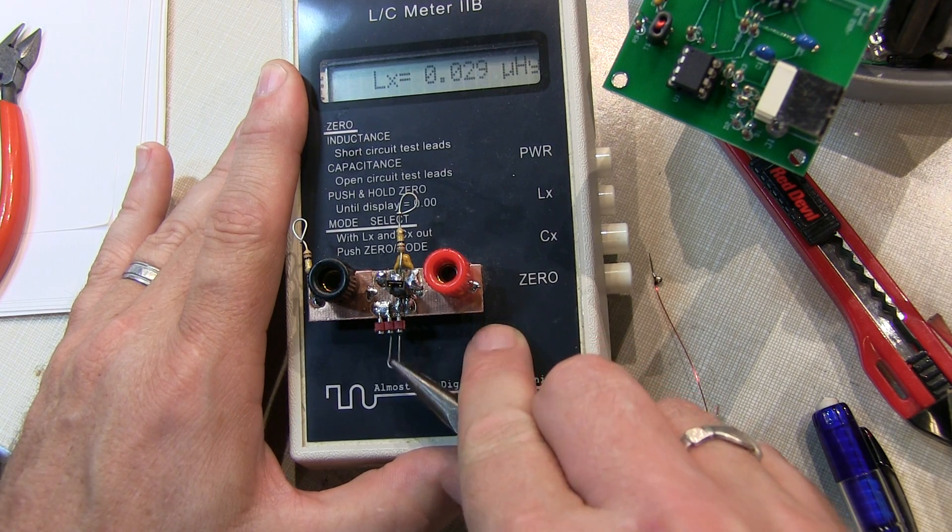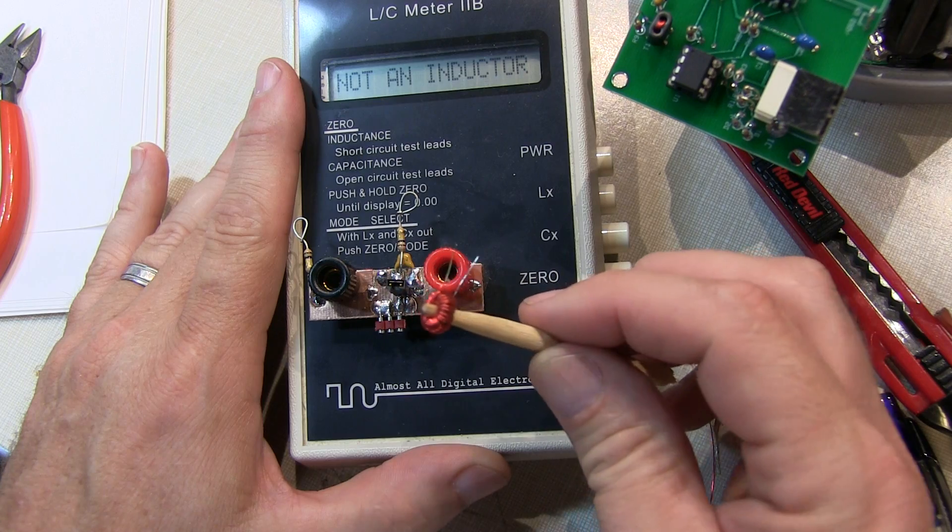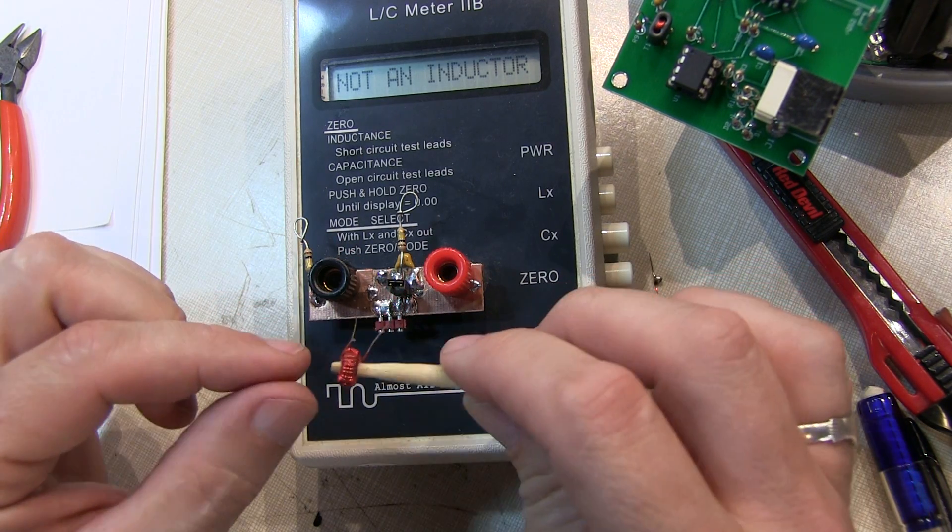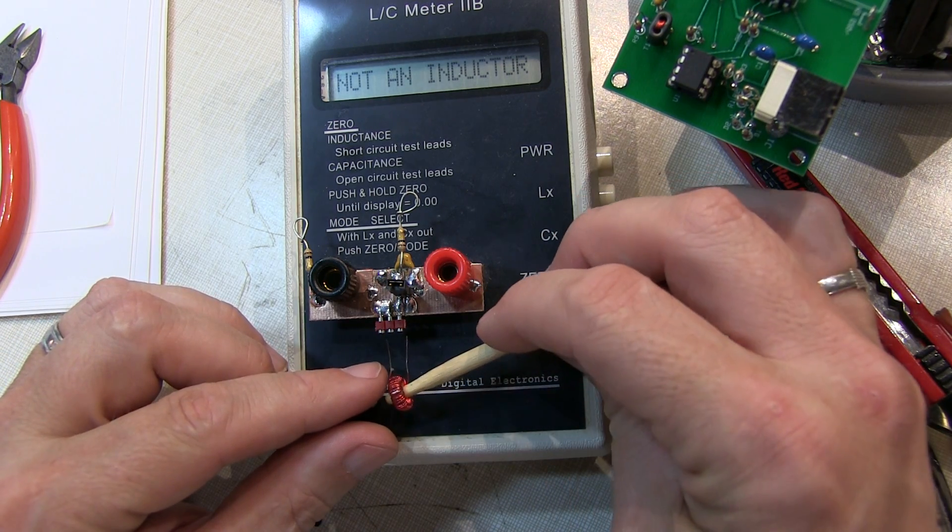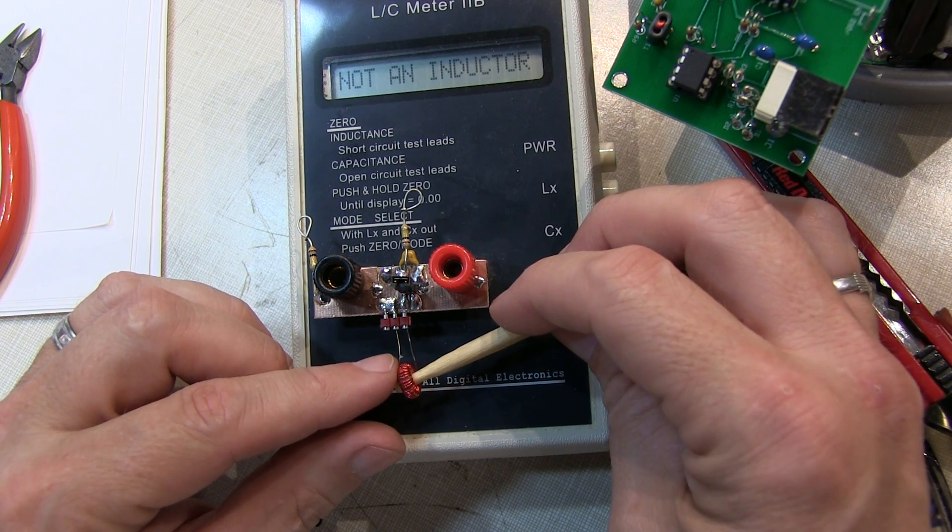So now I can pull that out and we'll insert our test inductor or the one that we just wound. I kind of jammed it on the end of my winding stick here and that will allow me to position this thing and actually stick the wires into the fixture.